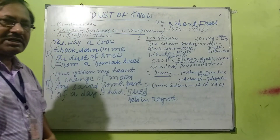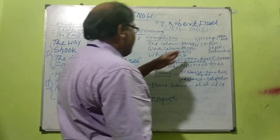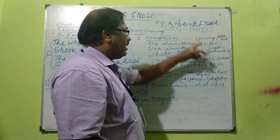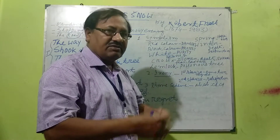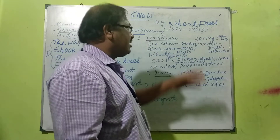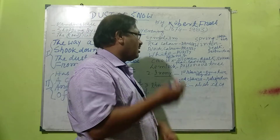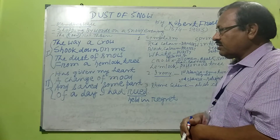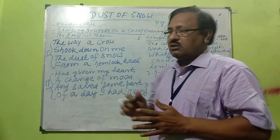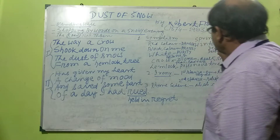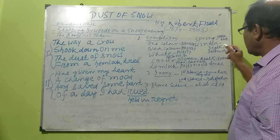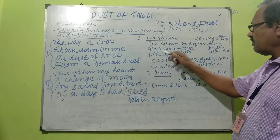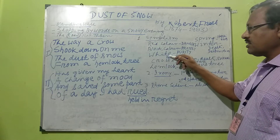It is a symbolical poem. You know what a symbol is. For example, spring stands for happiness, rebirth, joy, pleasure. Winter stands for death and destruction. You previously studied a poem — Ode to the West Wind — where wind stands for a powerful force of nature. Red color symbolizes danger. Black color symbolizes protest, fight. White symbolizes purity.